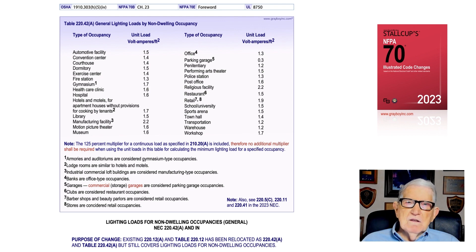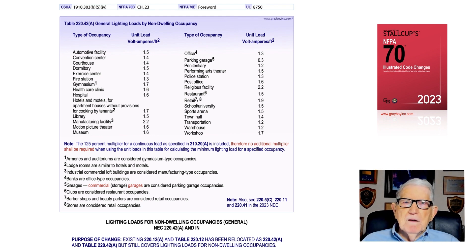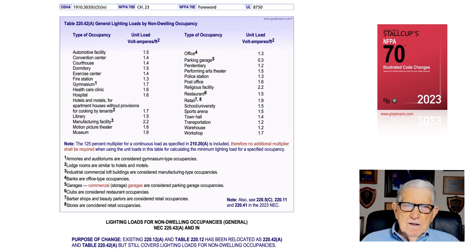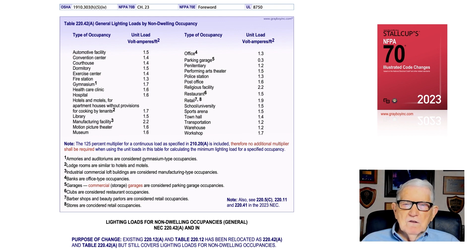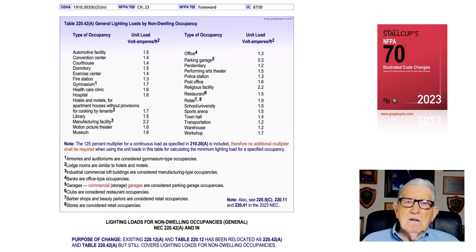If you do not have a listed occupancy in the table, go to table 220.14 and use that section when calculating loads for an unlisted occupancy. The note addresses the 125 percent rule already built into the VA ratings. Note 5 has been revised: commercial storage and garages are now considered parking garage-type occupancies. The note also references sections for the dwelling unit, which is no longer listed in table 220.42(a).